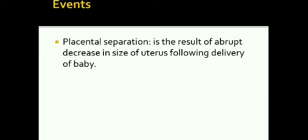What are the events that take place in the third stage of labor? The first event is placental separation. It is a result of an abrupt decrease in the size of the uterus following delivery of the baby. So after delivery of the baby, the placenta will separate from the uterus — that is what happens in the third stage of labor.